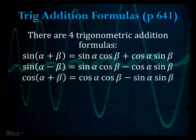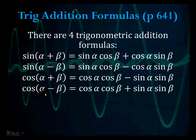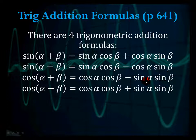Next, cosine of a plus b equals cosine a cosine b minus sine a sine b. Lastly, cosine of a minus b equals cosine a cosine b plus sine a sine b. Notice the pattern for cosine formulas: cosine a cosine b first, sine a sine b second — and the sign here differs from the sign of the formula.